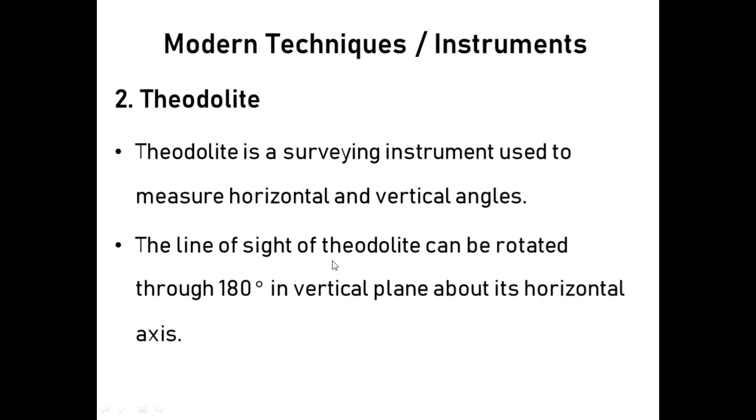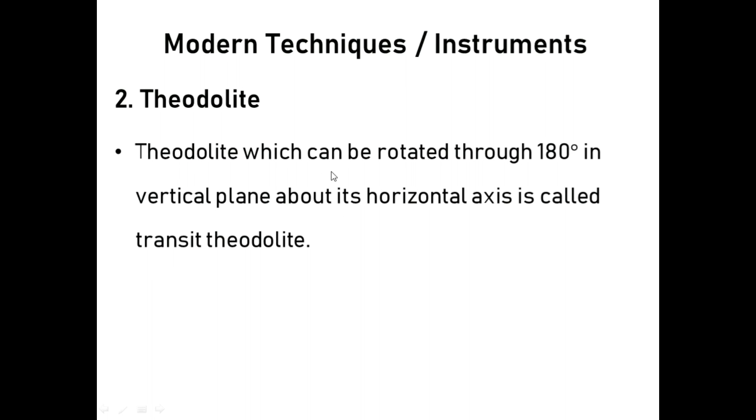The line of sight of the theodolite can be rotated through 180 degrees in vertical plane about its horizontal axis. The theodolite which can be rotated through 180 degrees in a vertical plane about its horizontal axis is called transit theodolite. Non-transit if rotation is not possible.